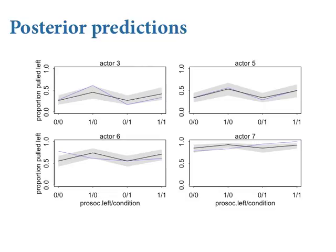The predictions get a whole lot better once we've got intercepts unique to each actor. Actor three is definitely responding to food, but not to the presence of a partner. The intercepts just move the level of the zigzag — they don't change the shape across actors. Controlling for heterogeneity in handedness has not revealed some hidden masked impact of the interaction. It could have been a masking effect, but it wasn't in this case.